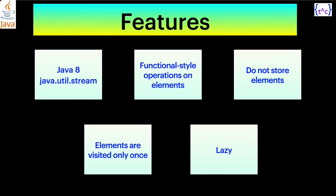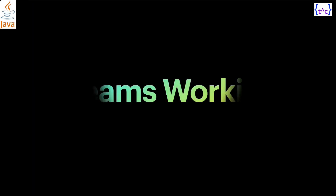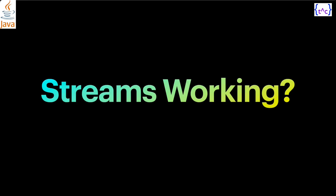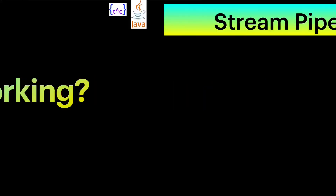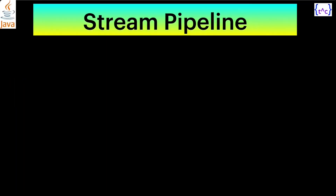Another feature is that elements are visited only once — streams are lazy by nature. That means whenever there is a need, then only the computation or calculations are performed. It doesn't pre-process things and keep them in the application; rather, whenever that particular processing is needed, then only the Stream API will perform that computation.